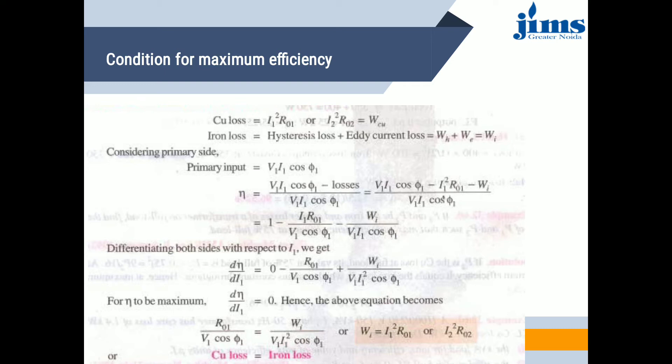Power input = V2·I2·cos φ, where V2 is the secondary terminal voltage, I2 is the secondary current at load, and cos φ is the power factor of the load. Copper loss = I2²·R02. Iron loss can also be written as hysteresis loss plus eddy current loss: WH + WE = WI.